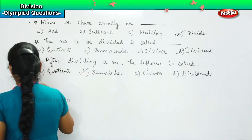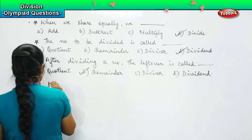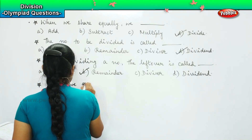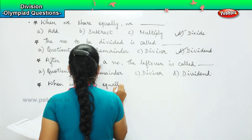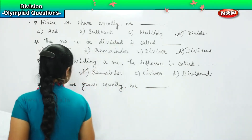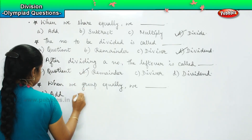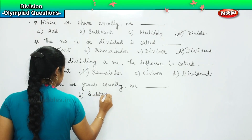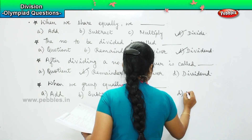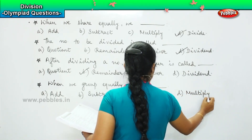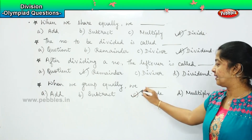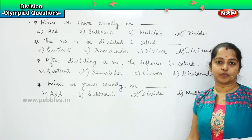So what are they trying to ask us? After dividing a number, the leftover — which is the balance amount — what is the balance figure called? Good. It is called as the remainder. Clear? The next question: when we group equally, we ___. Your options are: add, subtract, divide, multiply.